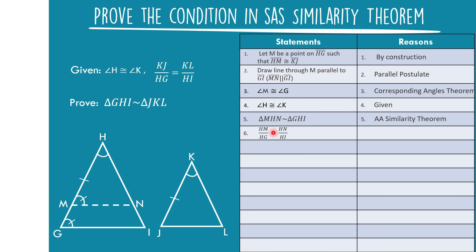Statement six: HM over HG is equal to HN over HI, by the property of similar triangles. Statement seven: KJ over HG is equal to HN over HI, by substitution, replacing HM with KJ from statement one.